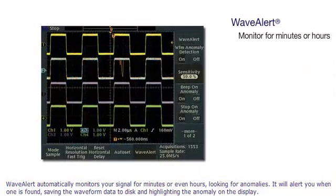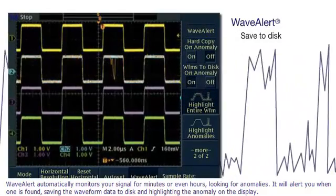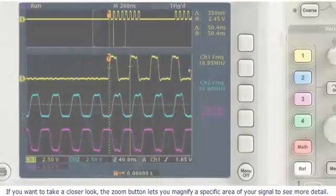WaveAlert automatically monitors your signal for minutes or even hours, looking for anomalies. It will alert you when one is found, saving the waveform data to disk and highlighting the anomaly on the display.